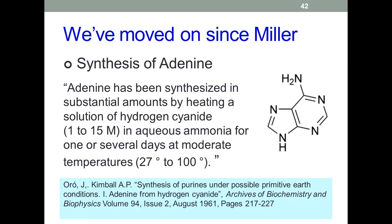It's been worked on since Miller. Miller's work has been criticized in that the atmosphere they used probably wasn't the atmosphere of the early Earth. But that's a bit beside the point — what they demonstrated was that they could produce biological materials from abiogenesis starting conditions. Many other people have done similar work, including a key study published in 1961 by Oro and Kimball, who were able to produce the nucleotide base adenine — a component of DNA — under non-biological conditions.